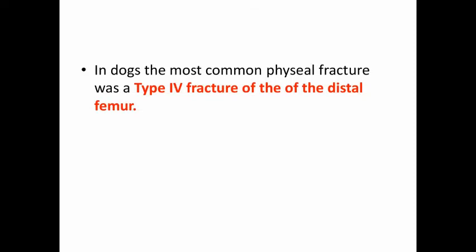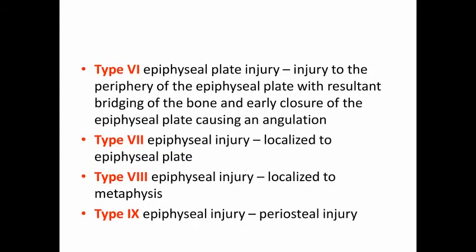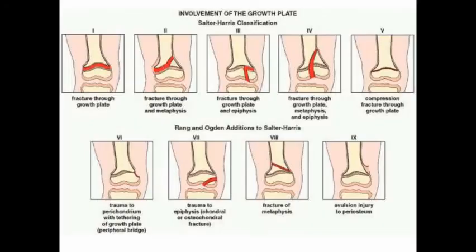Further types of epiphysial injuries have been subsequently added to the original Salter-Harris description — four more types were added. In Type 6, there is injury to the periphery of the epiphysial plate with resultant bridging of bone and early closure of the epiphysial plate causing angulation. In Type 7, the epiphysial injury is localized to the epiphysial plate. Type 8 is an epiphysial injury localized to the metaphysis, and Type 9 is an epiphysial injury consisting of periosteal injury.